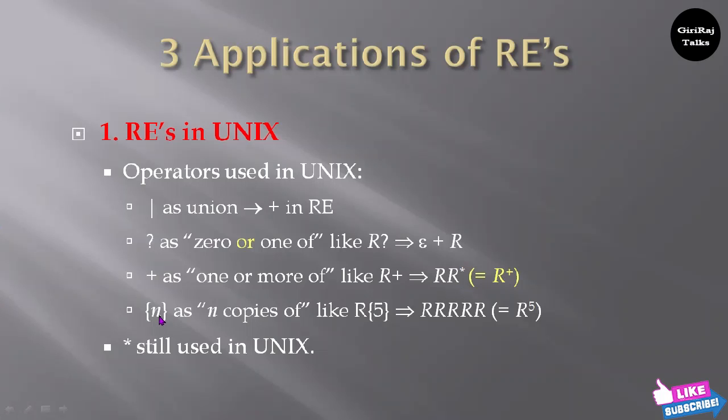Then within the brace, small n, you can represent as n copies of. You can write it as R{n}, which gives n R's: RRRRR. This is also you can write as R^5. Star operator is still used in Unix.